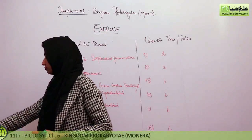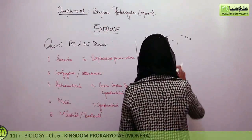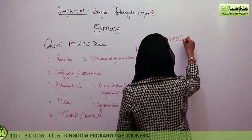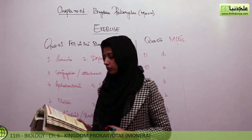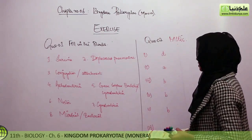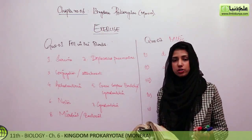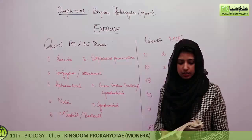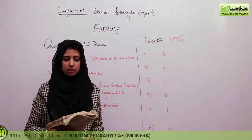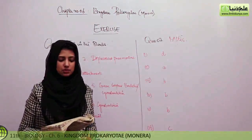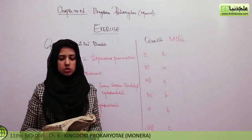MCQs — it's not true/false. First MCQ: which of the following is not found in all bacterial cells? The answer is capsule, which is not found in all bacterial cells. The majority of locomotory structures in bacteria are flagella. Which of the following is present in both gram-positive and gram-negative cell walls? Option B — peptidoglycan. This is present in both cell walls.